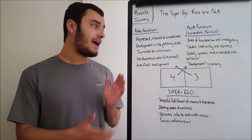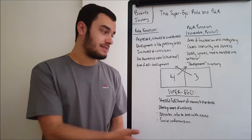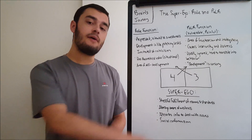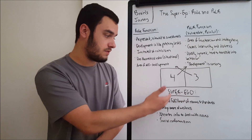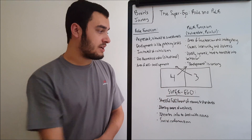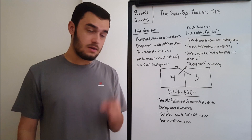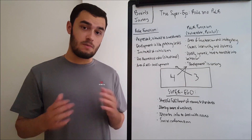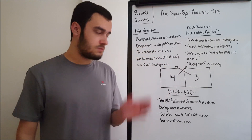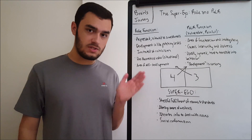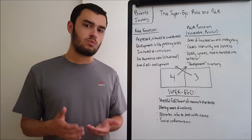First off we want to look at the role function. I have this diagram here like last time — this is how it's laid out in the model. The third function is over here and the fourth function is over here, so if you can picture a one, two, three, four in a ring, that's on purpose. But obviously the way I'm describing it, they're on opposite sides. So let's talk about the role function.